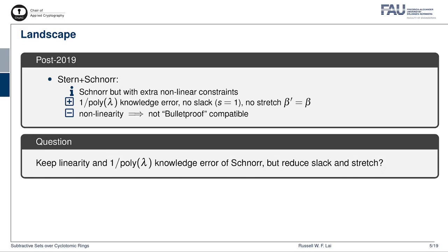Given this state of affairs, a natural question is therefore: can we keep the linearity and inverse polynomial knowledge error of Schnorr-like systems, but at the same time reduce the slack and stretch? To answer this question, let us take a closer look at some existing Schnorr-like systems.